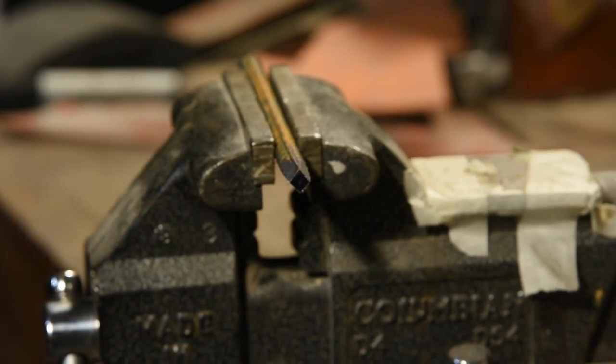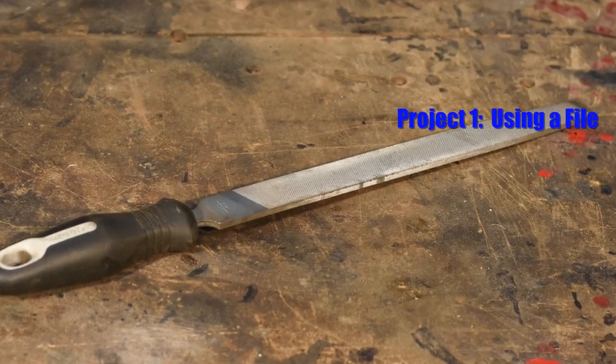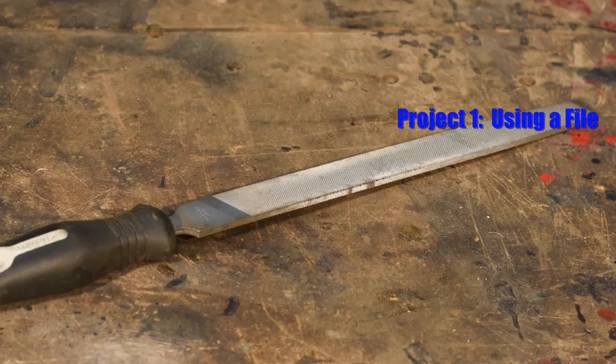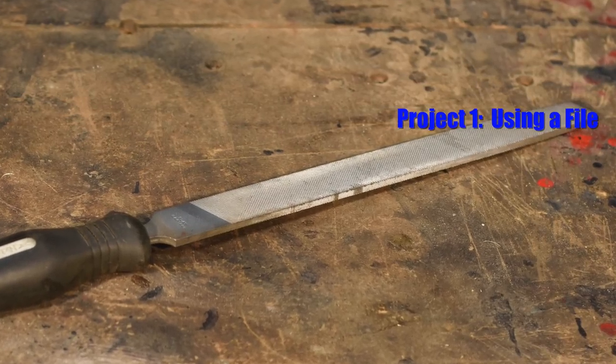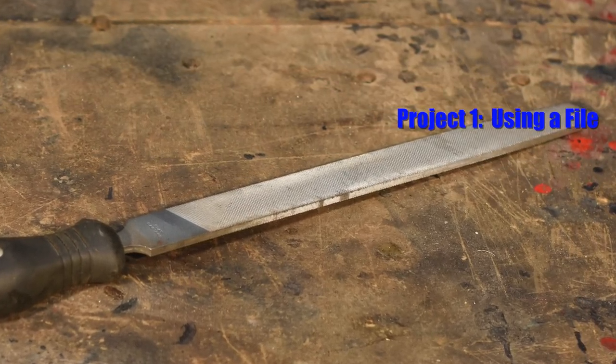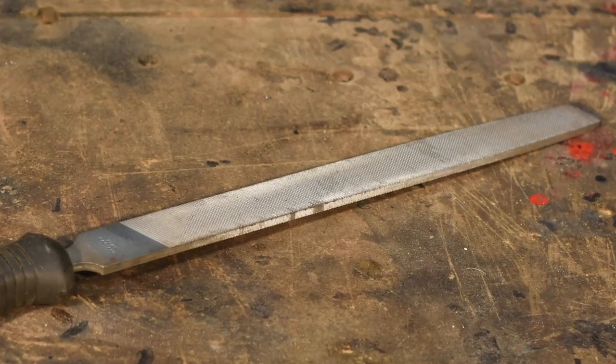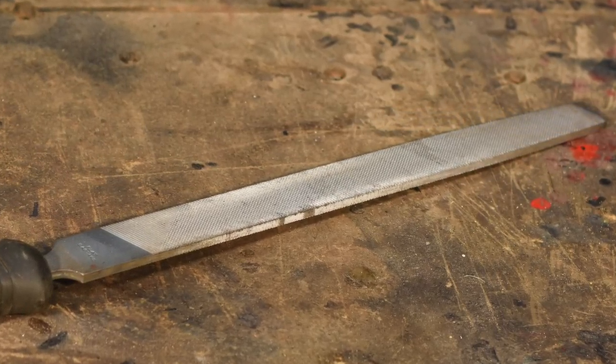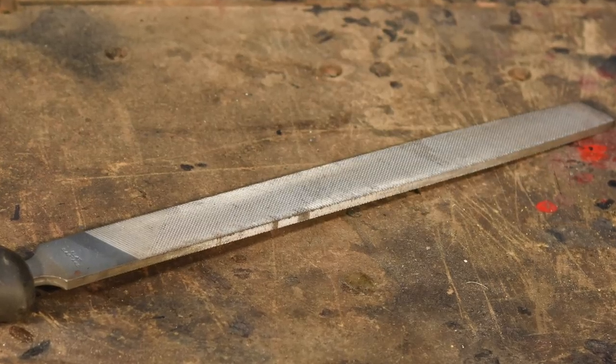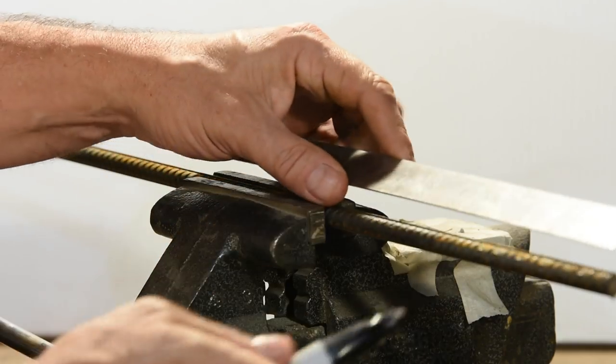Most of the work that you'll do on this first project will require just one tool, this, a double-cut bastard file. The file is the foundational tool of all metalworking. If you can use a file competently, you'd be amazed at the things you can make. And files will move a lot more material than you might think. But first you'll need to cut the rebar.